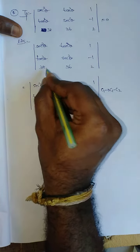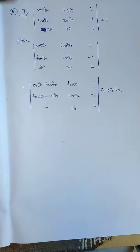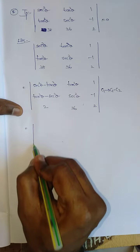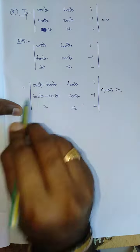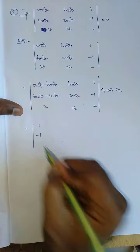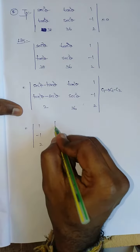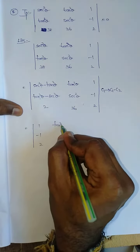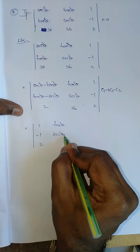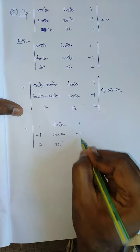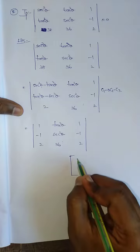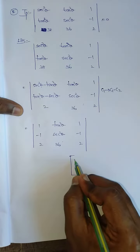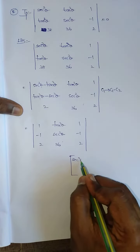Applying C1 minus C2: the first entry becomes sec²θ minus tan²θ, the second becomes tan²θ minus sec²θ, and the third becomes 38 minus 36, which is 2. So now we know sec²θ minus tan²θ equals 1, and tan²θ minus sec²θ equals minus 1. This gives us the new C1: 1, minus 1, 2.